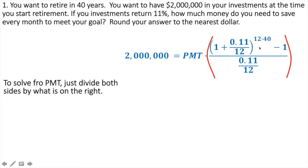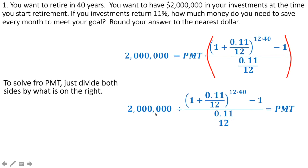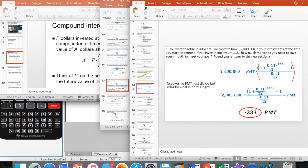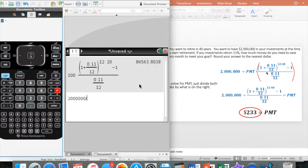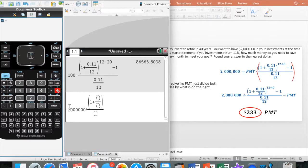I divide both sides by that — that will cancel it out, leaving me payment equals this. We're going to type this one into our calculator exactly like you see it. This is going to be 2 million divided by this big number. Let's bring in the calculator. We're going to go 2 million divided by — and I'm going to have it look exactly like this. Control, division sign gives me my fraction. I go 1 plus, I've got another fraction: 0.11 divided by 12.